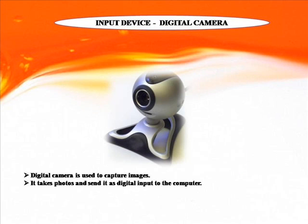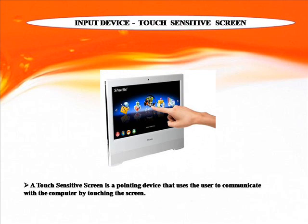Input Device: Digital Camera. A digital camera is used to capture images; it takes photos and sends them as digital input to the computer. Touch Sensitive Screen: A touch sensitive screen is a pointing device that allows the user to communicate with the computer by touching the screen.